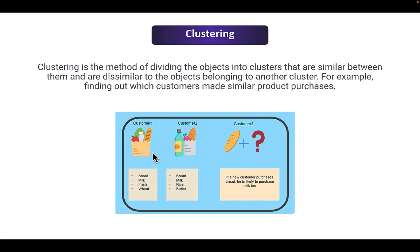Clustering is a method of dividing objects into clusters or groups that are similar to each other and dissimilar to objects in another cluster. A practical example is finding out which customers made similar product purchases. If a customer at a bakery bought bread, milk, fruits, and wheat, and another bought bread, milk, rice, and butter, we can observe that customers who buy bread are most likely to also buy milk. After getting data from many customers and passing it to our algorithm, we can find which items are bought frequently together and position them correctly inside our store.